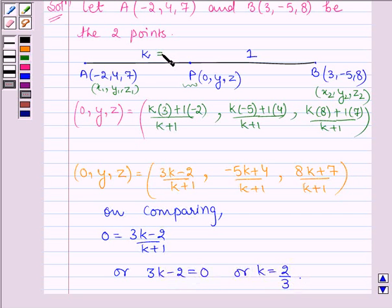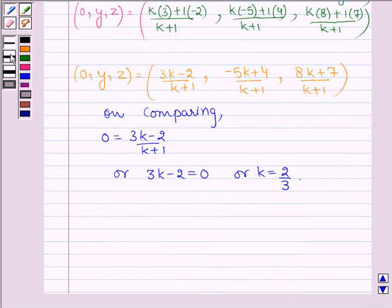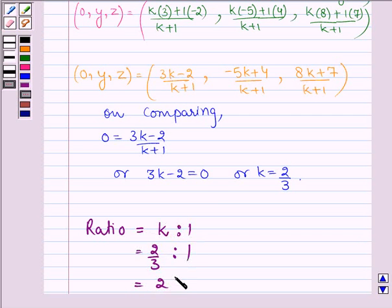So here k is equal to 2 upon 3. Hence the required ratio in which the YZ plane divides the points A and B in the ratio k to 1 is 2 upon 3 to 1 or 2 to 3.